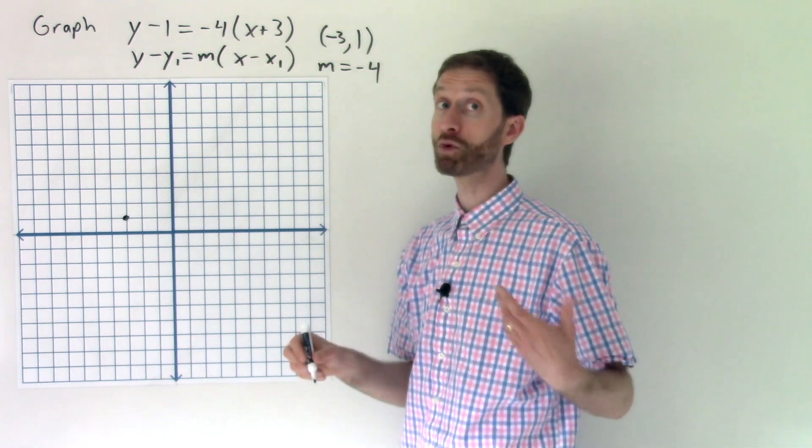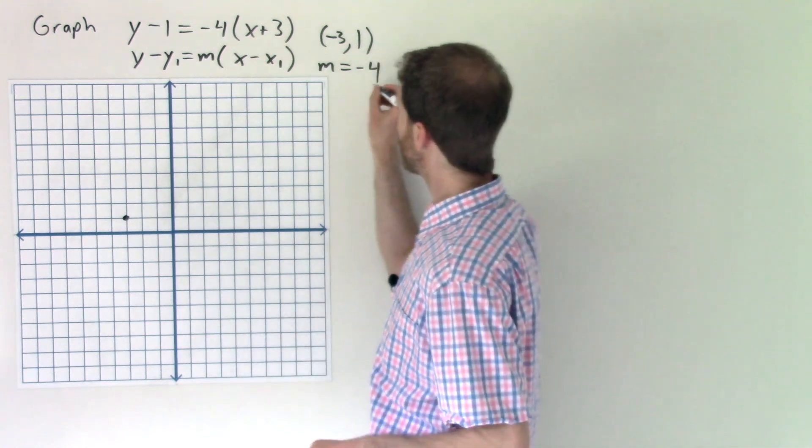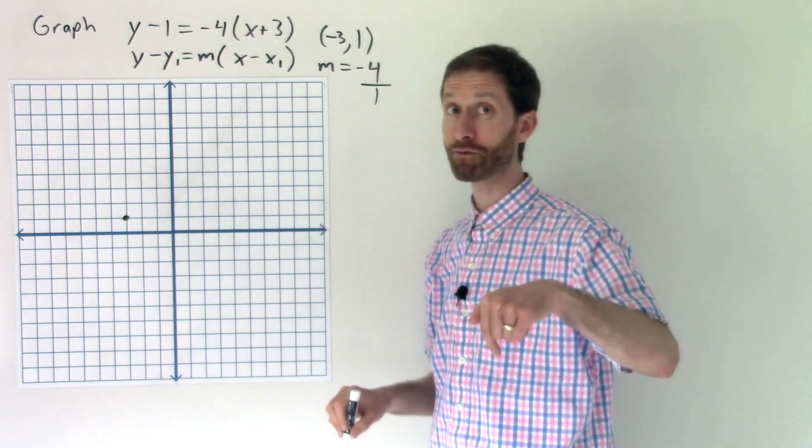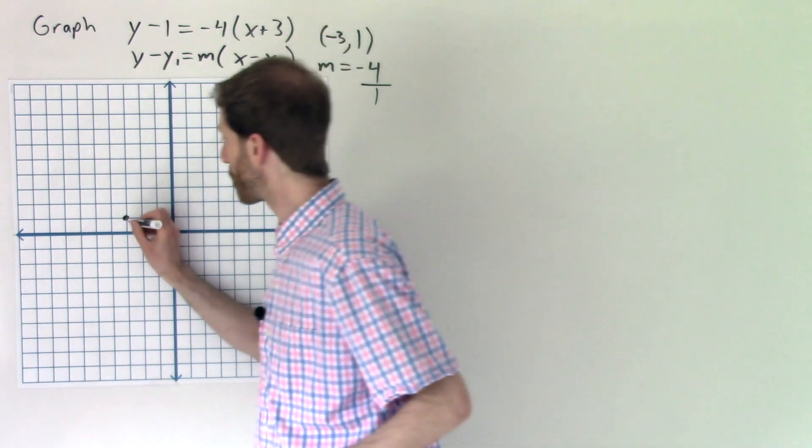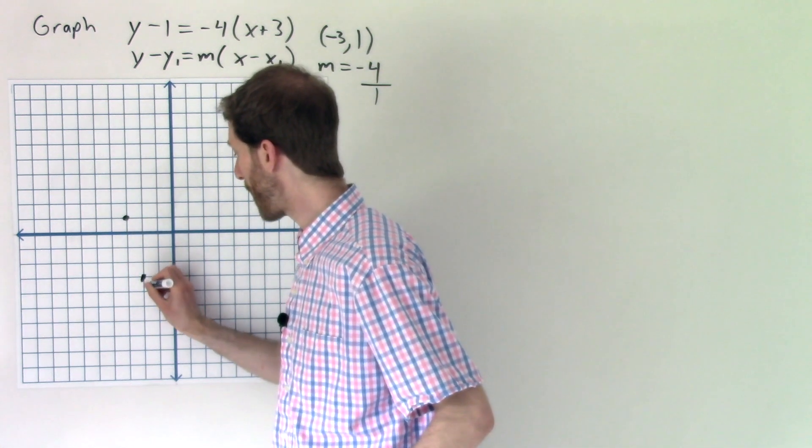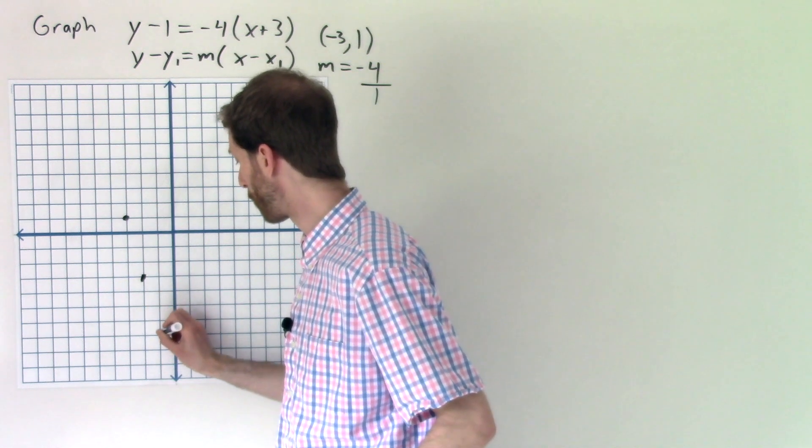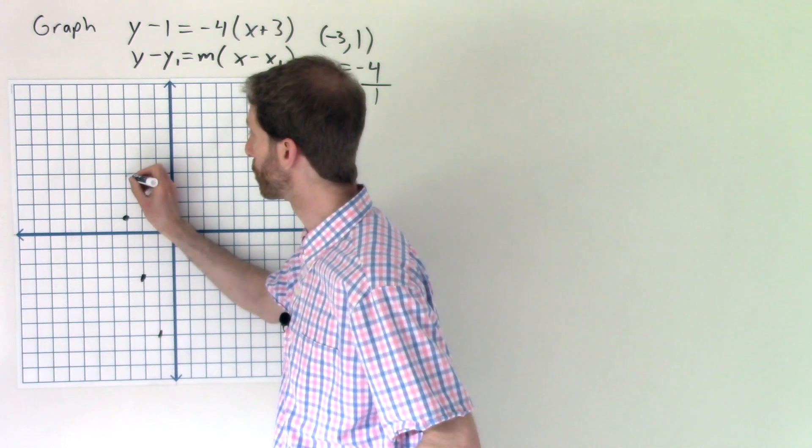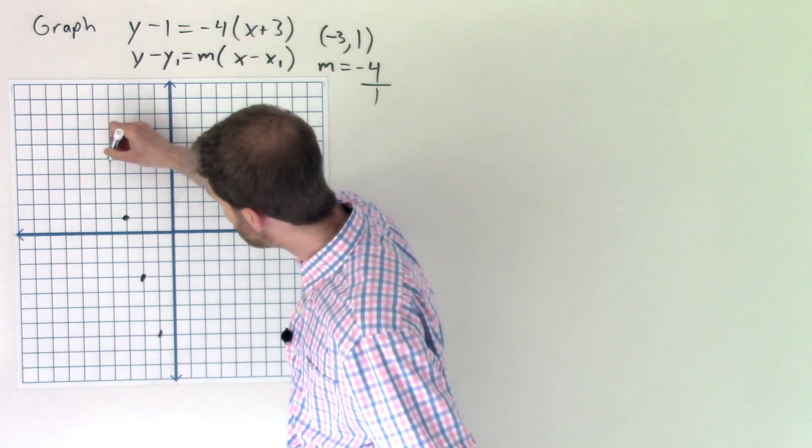And now my slope tells me how to move off of that point. Negative 4, remember, is the same as negative 4 over 1, which tells us to rise down 4 and run 1. So I'll go down 1, 2, 3, 4 over 1. Beautiful. Down 1, 2, 3, 4 over 1. And one more for good measure in the opposite direction. Up 1, 2, 3, 4, left 1. Beautiful.